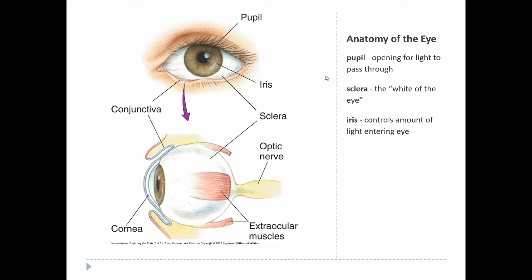The iris is the ring around the pupil — it's essentially a ring-shaped muscle that forms the pupil. It can get wider or narrower depending on the light level. In a brightly lit room, the iris contracts and makes the pupil smaller to reduce the amount of light coming in. In a dimly lit room, it relaxes and allows the pupil to expand, letting more light in.